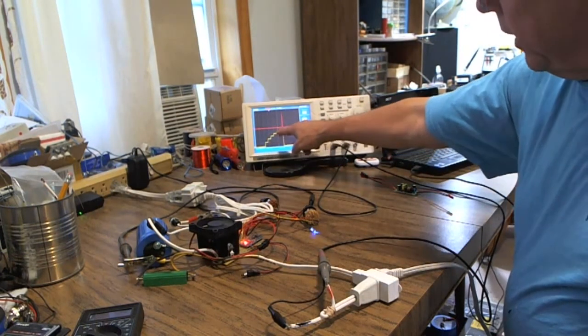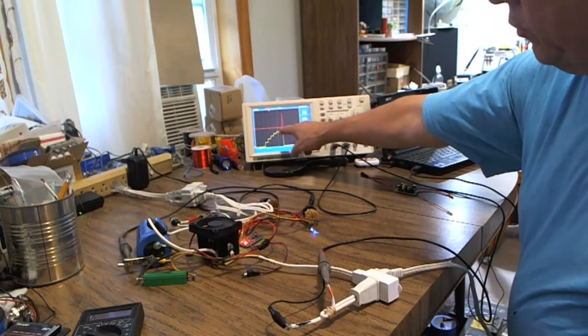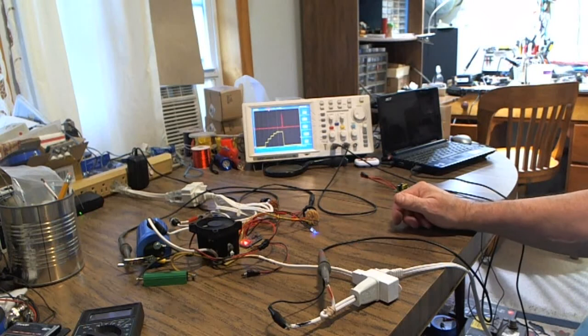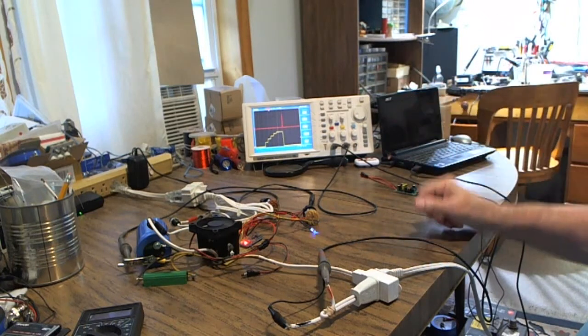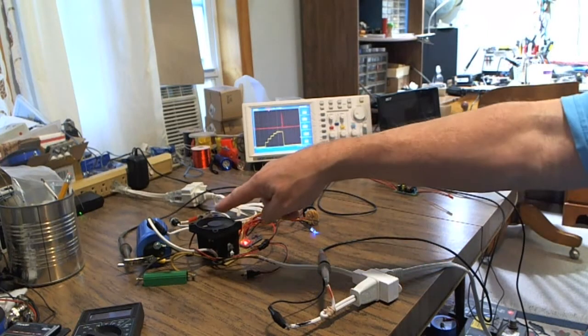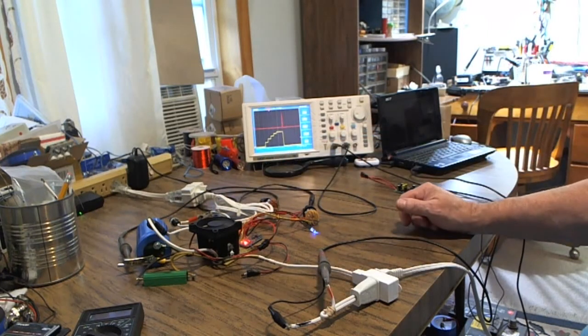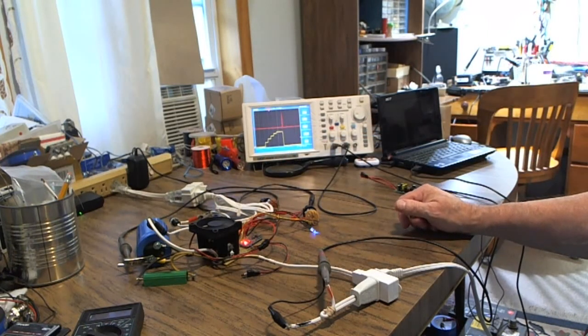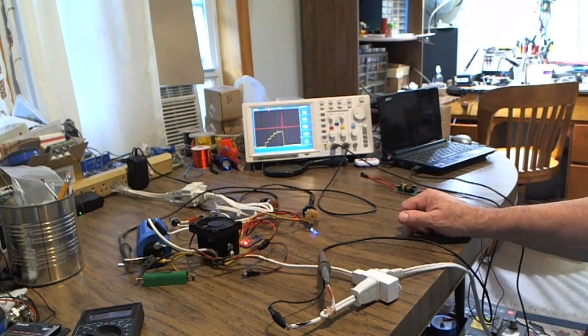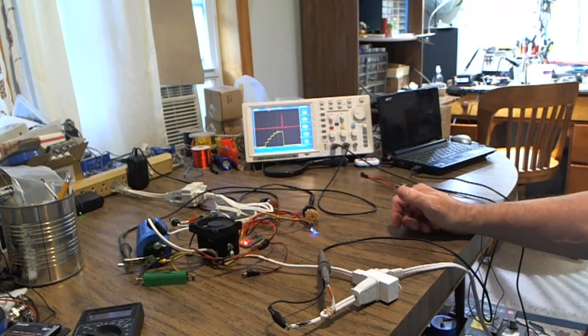You see the stair casing. And that is the cap being charged under Arduino control in stages. And I do it that way so I don't suck all the current from your wall outlet instantaneously to charge a cap. It's called phase charging. I charge it in phases. It's on the AC cycle which has been rectified.